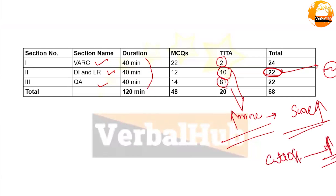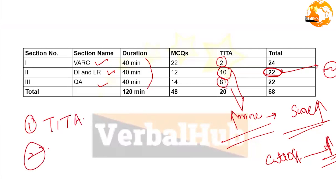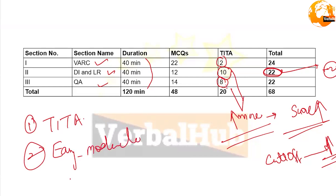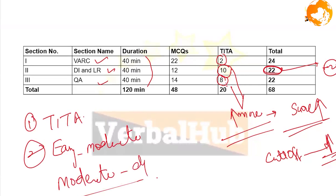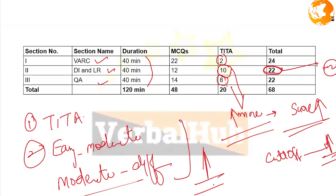So this year we can expect the cutoff to be a little bit higher compared to previous years. There are two reasons: first is the increased number of TITA questions, and second — and more importantly — the paper overall ranged from easy to moderate to moderate to difficult. No one classified it as totally difficult, which means more students likely scored higher, pushing the cutoff up.